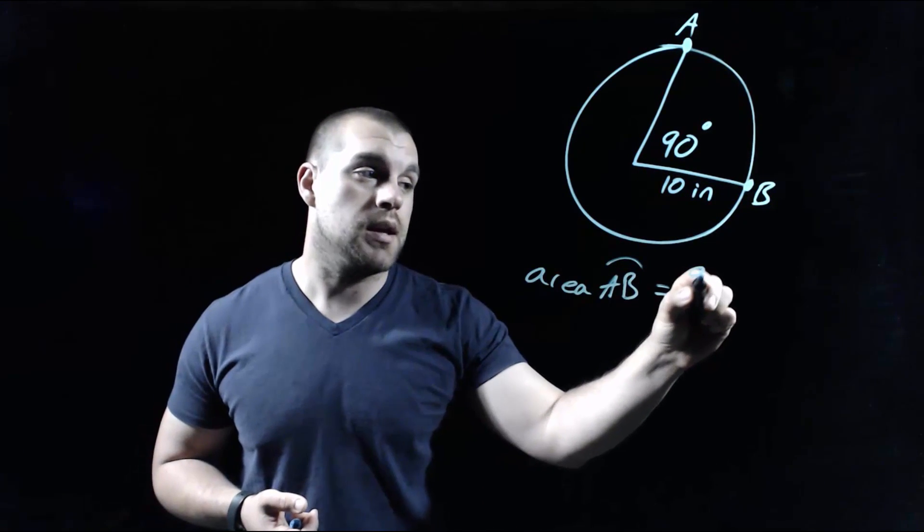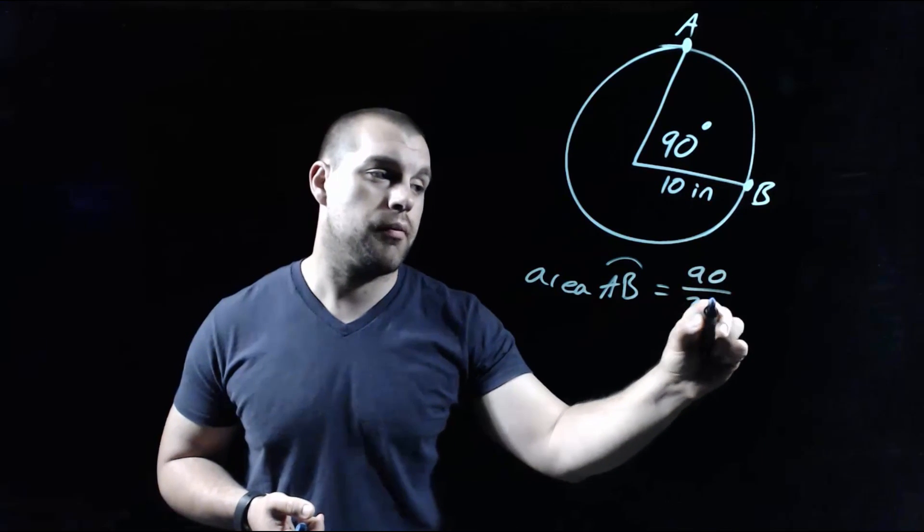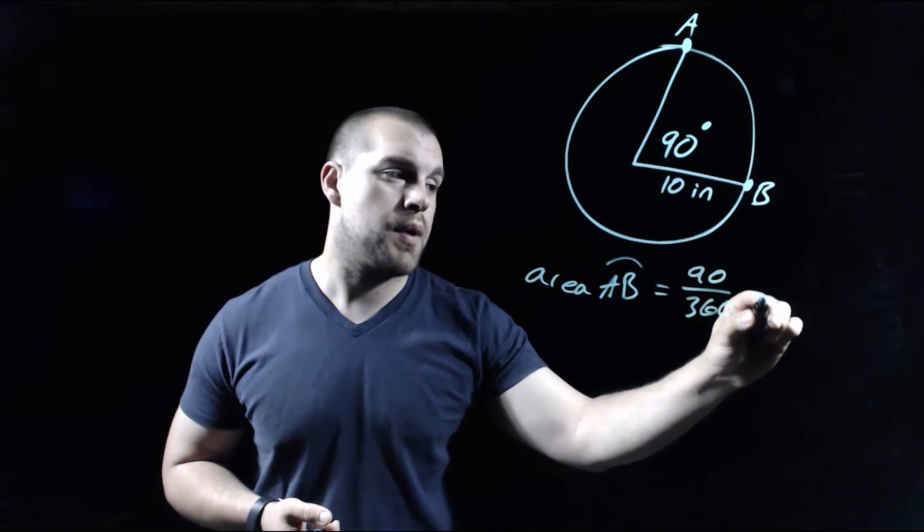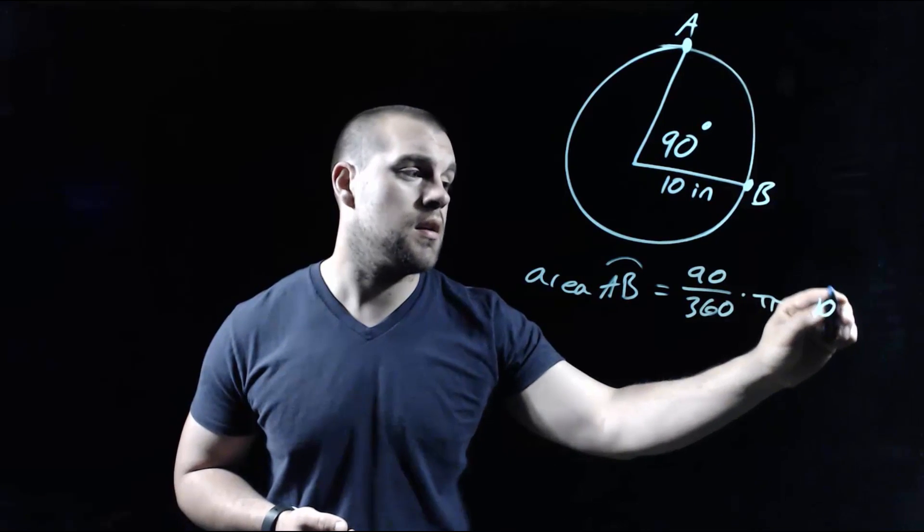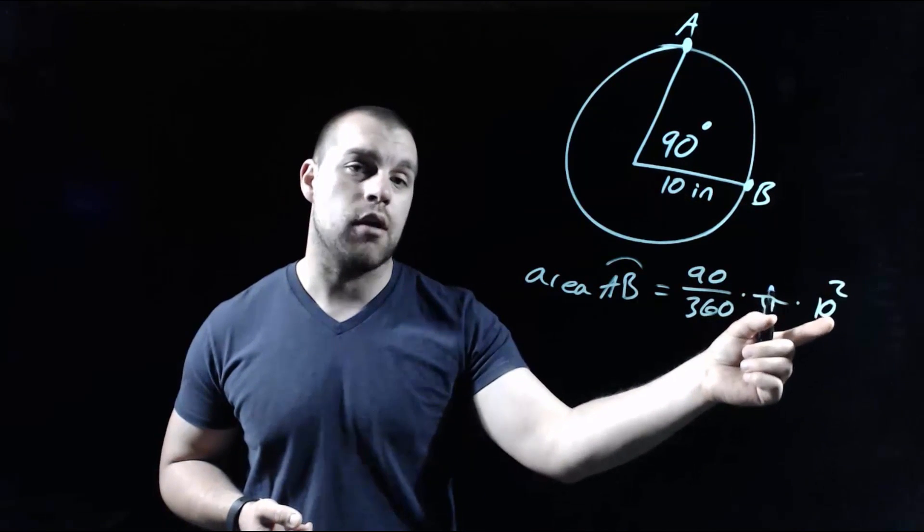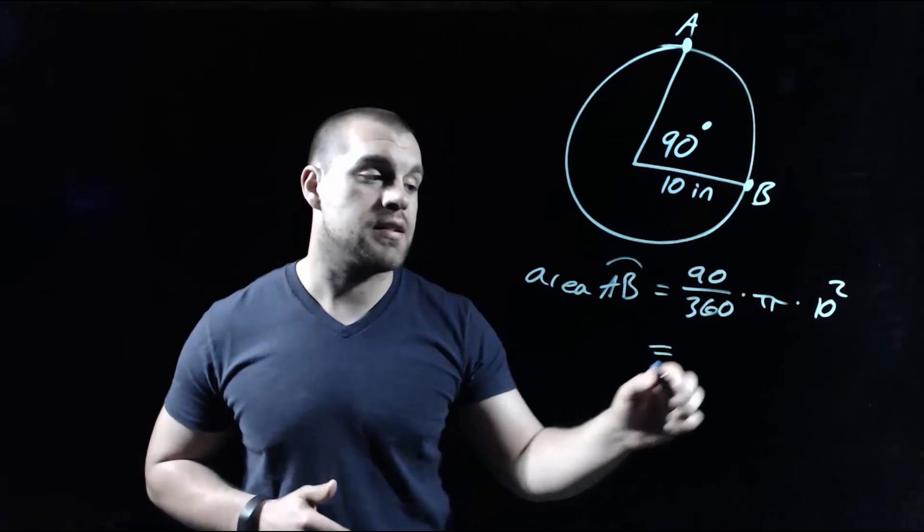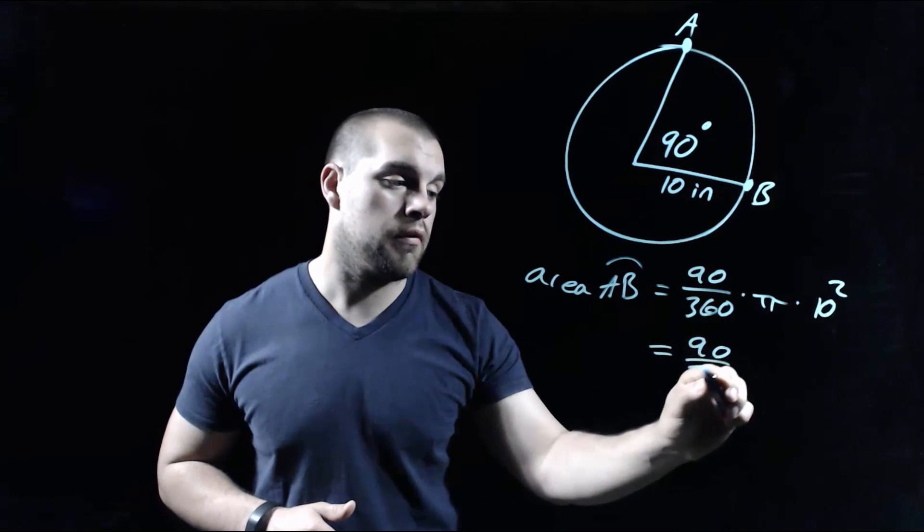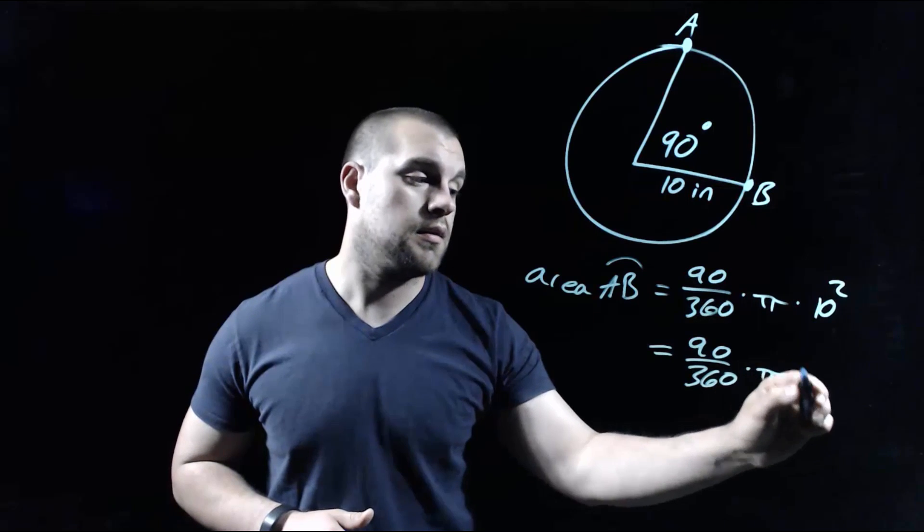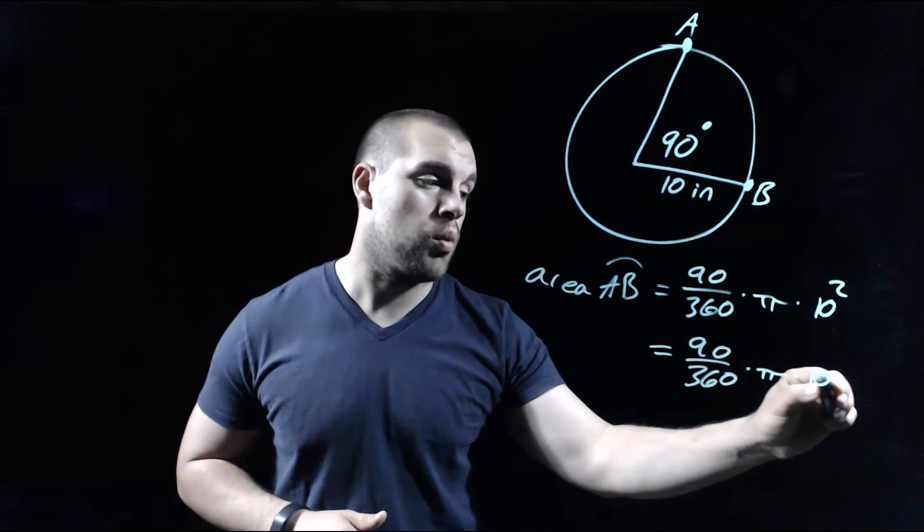90-degree central angle means 90-degree arc over 360 times pi times our radius, which is 10 squared, because we need the area of our circle on the back end of our formula. Now we can simplify this down a little bit. So we've got 90 over 360 times pi times 10 squared is 100.